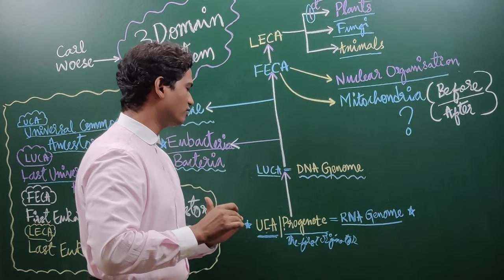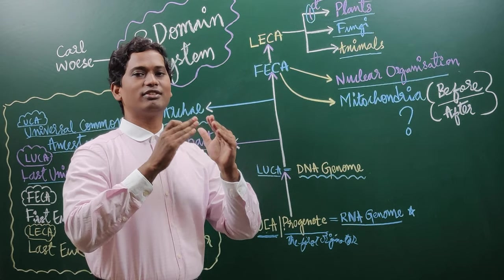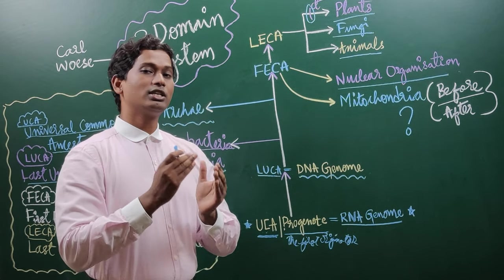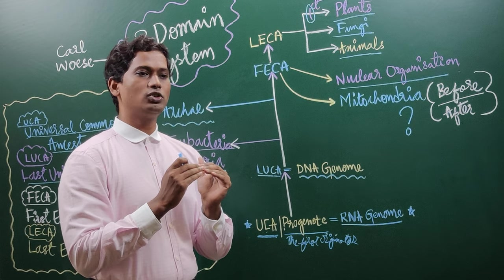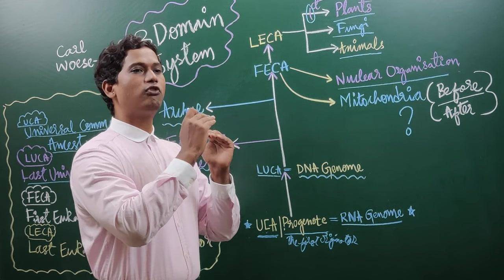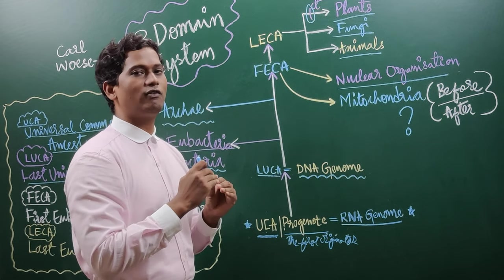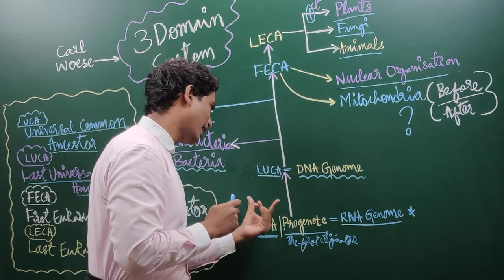Slowly what happened is, when he told that LUCA came into existence, LUCA was the first progenote of this planet. Slowly what LUCA did was, slowly started progressing, evolving from step by step. After evolving, one finding what it did was, it gave rise to LUCA.